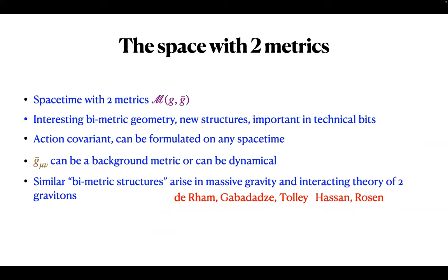As a result, we end up with a spacetime with two metrics: G, the physical dynamical metric, and another one ḡ. Mathematically, this is quite interesting—it's a structure looking at a spacetime equipped with two different metrics, which doesn't seem to have been studied much by mathematicians. New structures arise in this geometry, and this geometry is important in the technical bits, particularly in constructing the interactions and showing they are properly covariant.